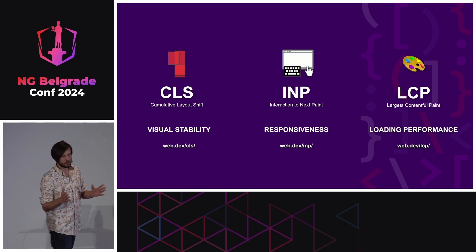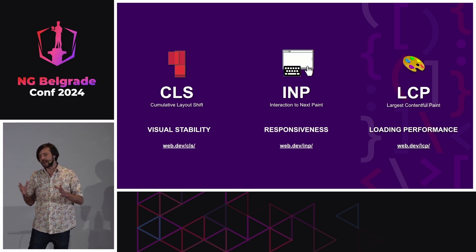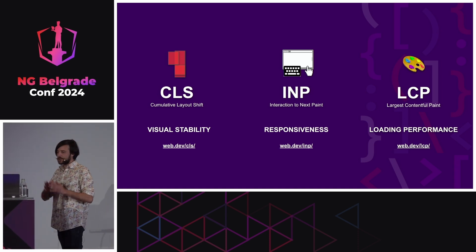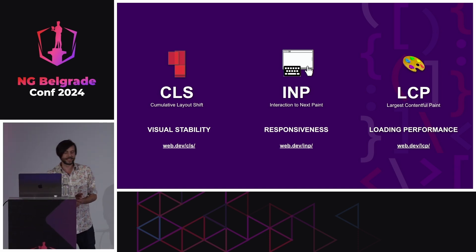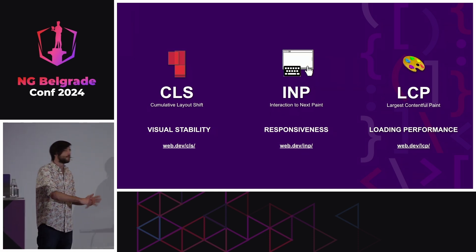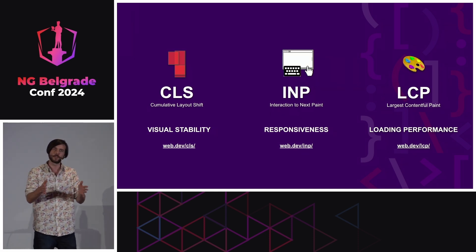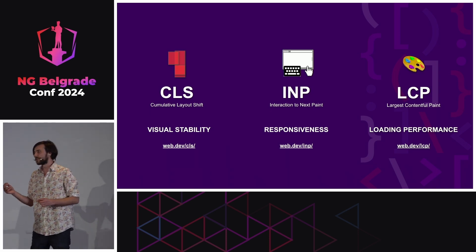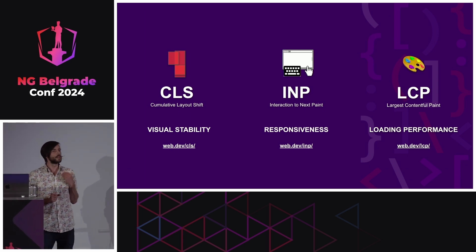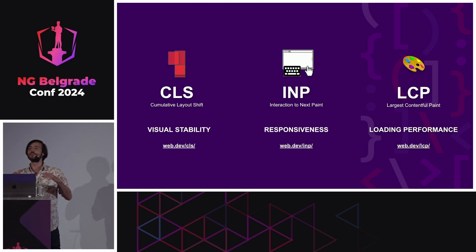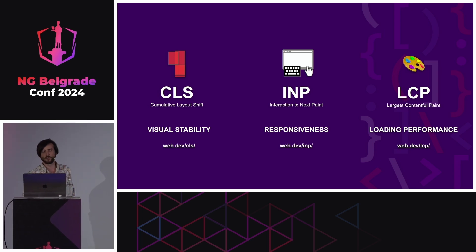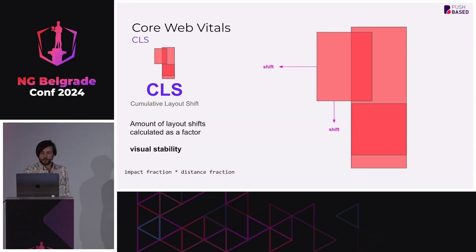The second metric is INP — Interaction to Next Paint. In the past we had not-so-nice metrics like Total Blocking Time or First Input Delay. INP is the responsiveness of your website throughout the whole visit — not only when you first load the page, but over the entire lifetime of the user session. The last one, Largest Contentful Paint, is the loading performance: how long until you can consume the content you want.